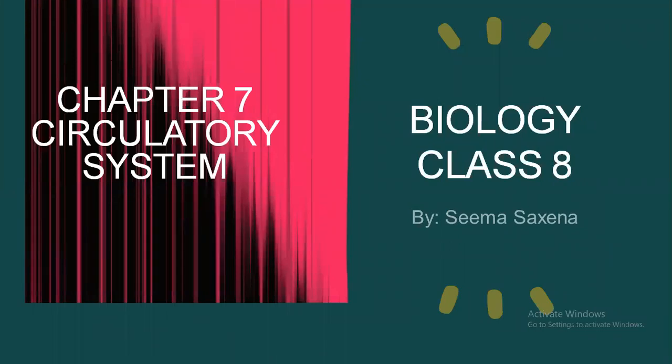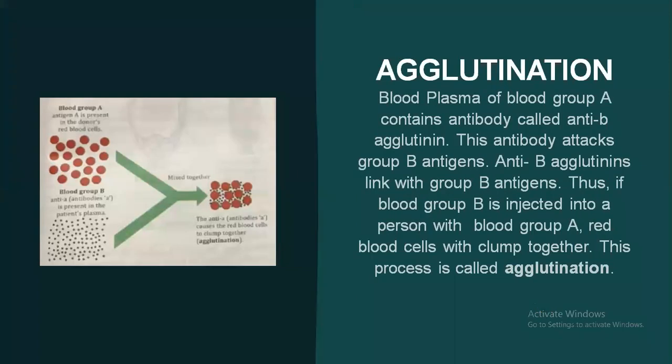Hello students, myself Seema Siksena, your biology teacher. Today we are going to discuss some topics of Chapter 7, Circulatory System of Class 8 Biology. The topics which we are going to discuss in this session are agglutination, blood vessels, and difference between artery and vein.